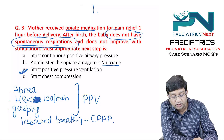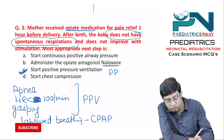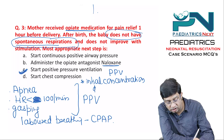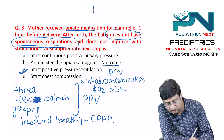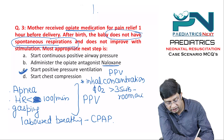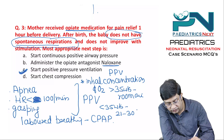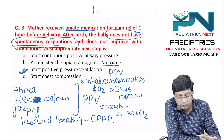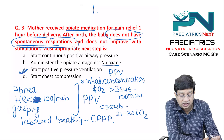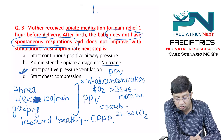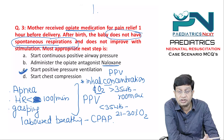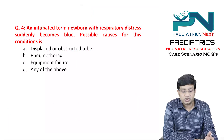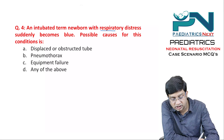When starting positive pressure ventilation, remember the initial oxygen concentration: if the child is more than 35 weeks gestational age, use room air. If the child is less than 35 weeks, start with 21–30% oxygen. So: apnea or heart rate less than 100 or gasping → positive pressure ventilation; initial O2 depends on gestational age.